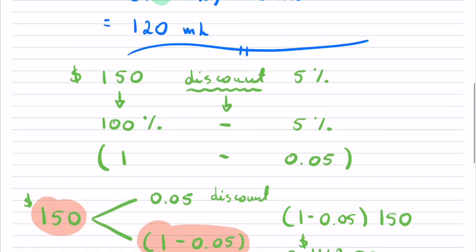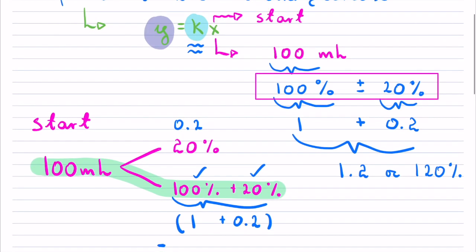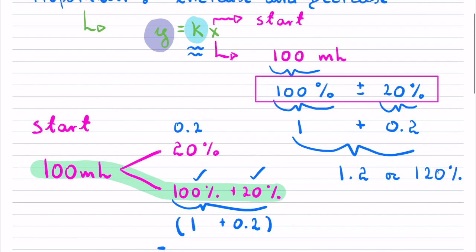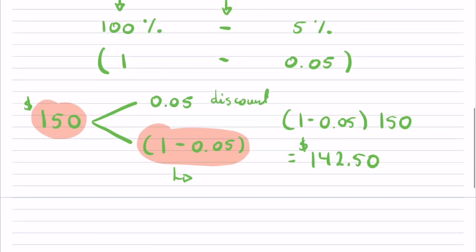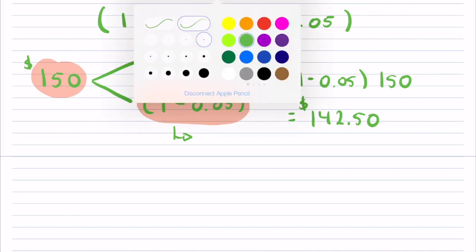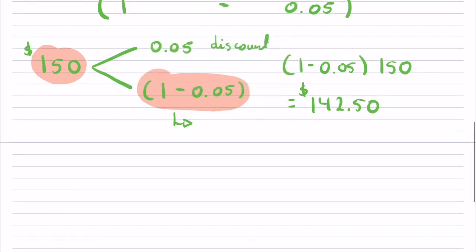These increases and decreases that we have with respect to these proportions don't have to just happen with volume or money. They can even happen with medication flows. You can imagine that what you would have, let's say that you are setting up an IV or something like that, and maybe it is flowing at 10 milliliters per hour.